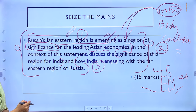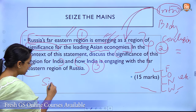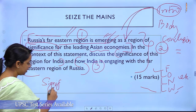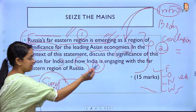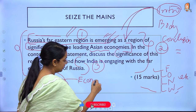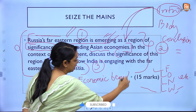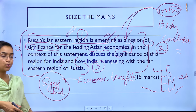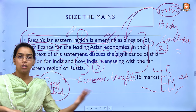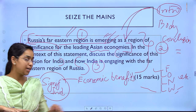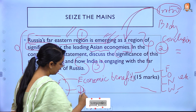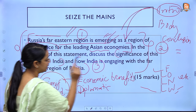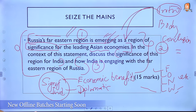Next, address the significance of this region for India. The first significance is economic benefits — India can explore fishery resources, energy resources, wood, and the diamond industry can be boosted. There are a lot of economic benefits that can be derived from this region. The second significance is diplomatic benefits — India can deepen its ties with Russia by getting involved in this region.